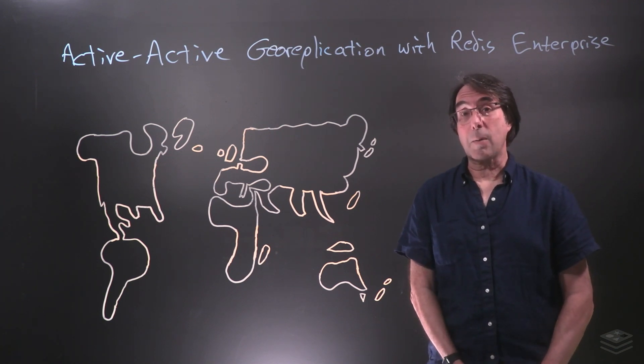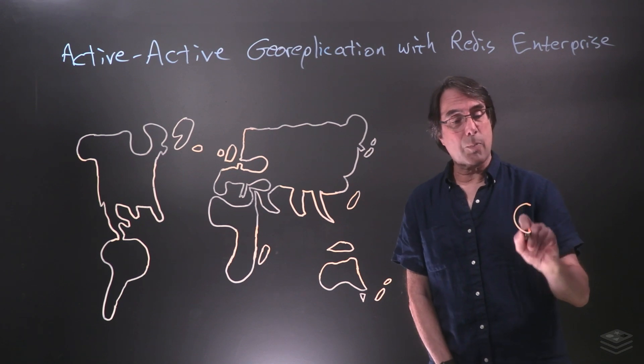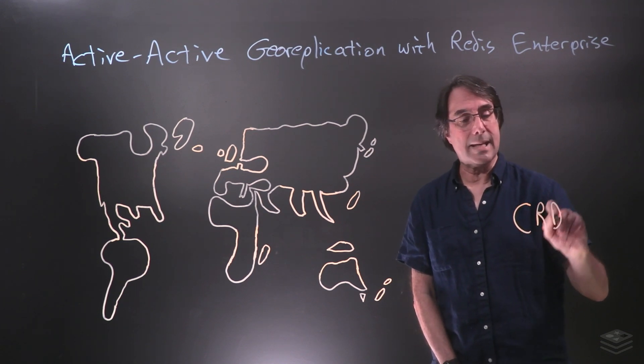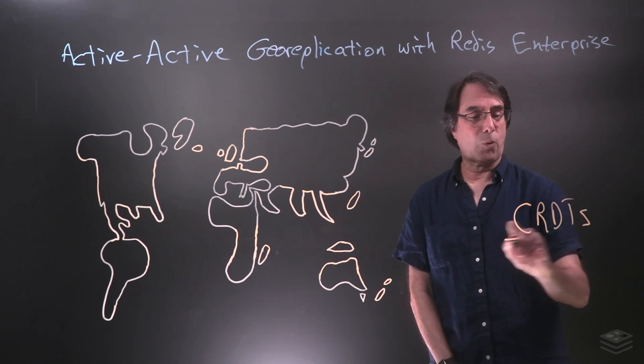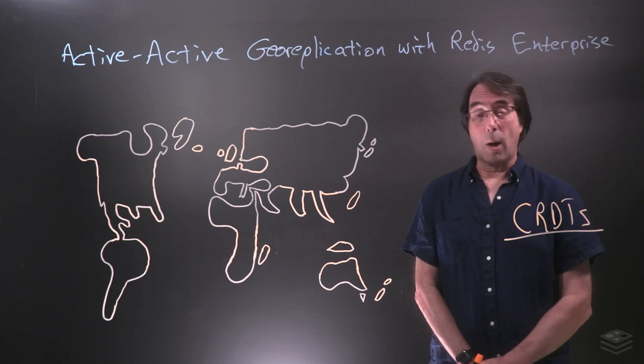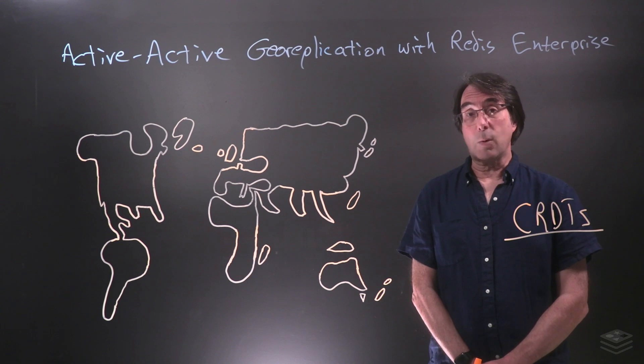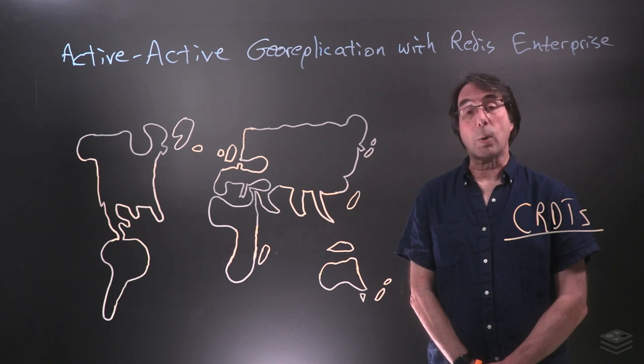The technology that makes that happen is something called CRDTs. That stands for Conflict-Free Replicated Data Types. We have a CRDT white paper and some other resources on our website if you'd like to learn more.